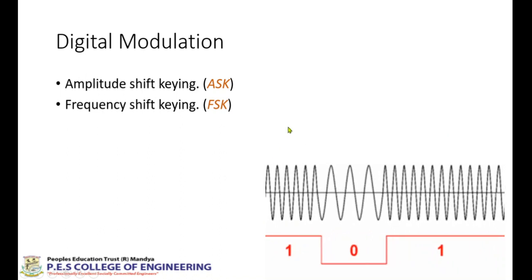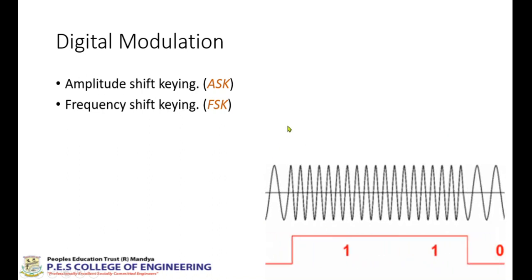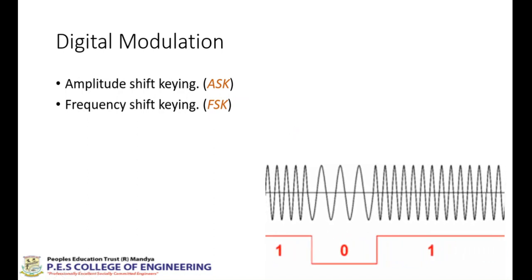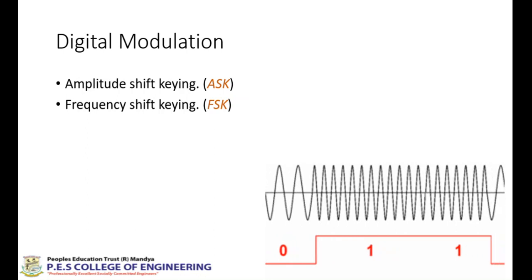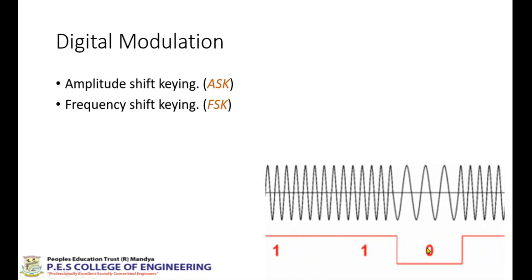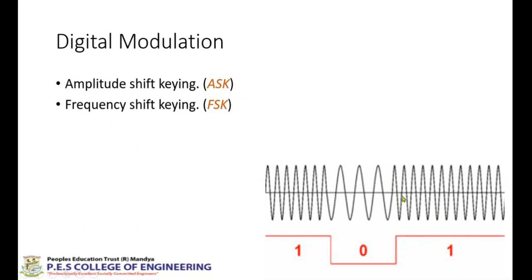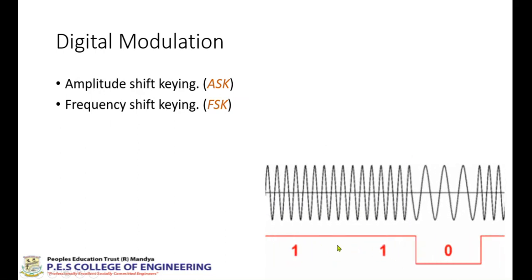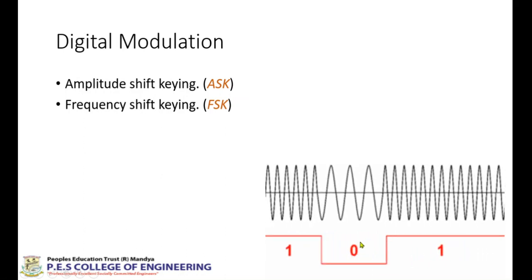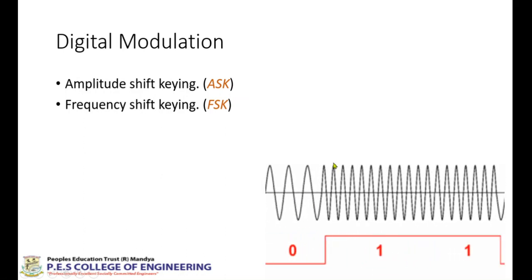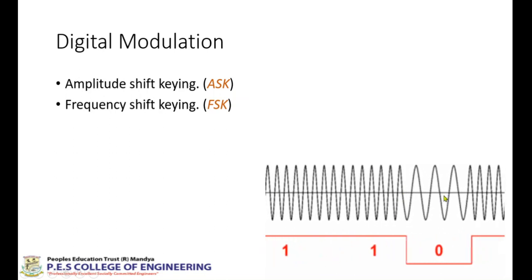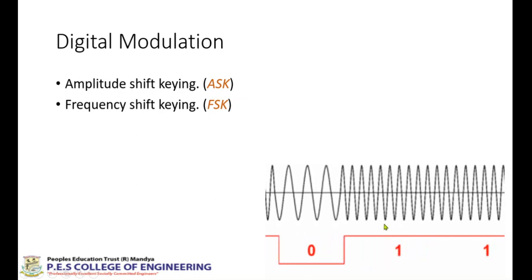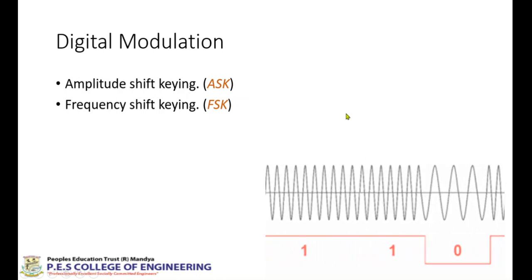In Frequency Shift Keying, I have two carrier signals — say F1 at 5 kilohertz and F2 at 10 kilohertz. Whenever I have bit 0, I transmit the lower frequency wave, and whenever I have bit 1, I transmit the higher frequency wave. This is frequency modulation of digital data.